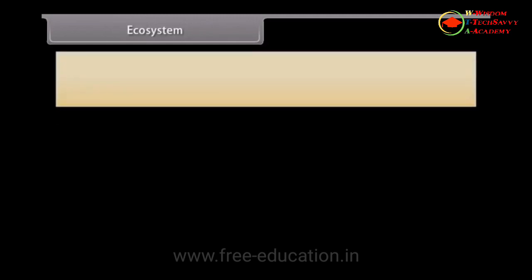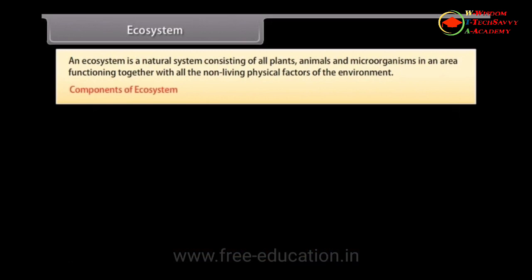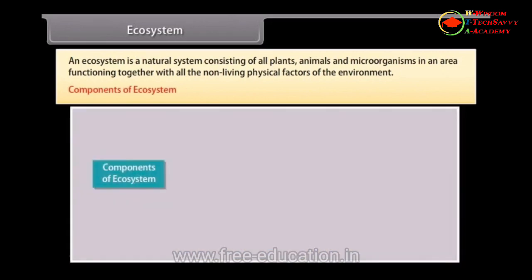An ecosystem is a natural system consisting of all plants, animals and microorganisms in an area, functioning together with all the non-living physical factors of the environment.